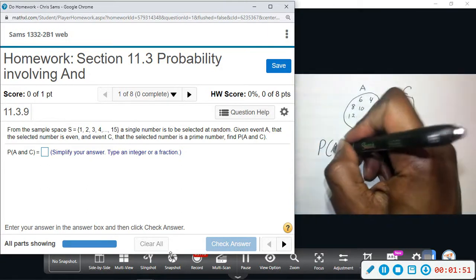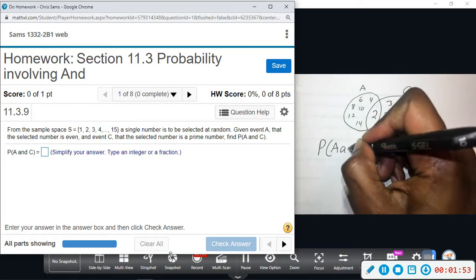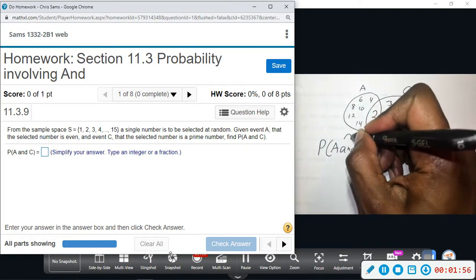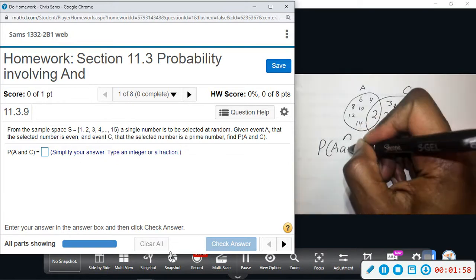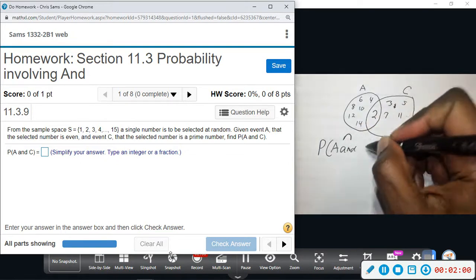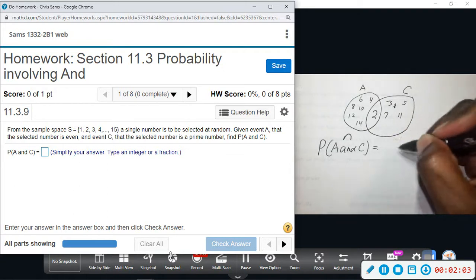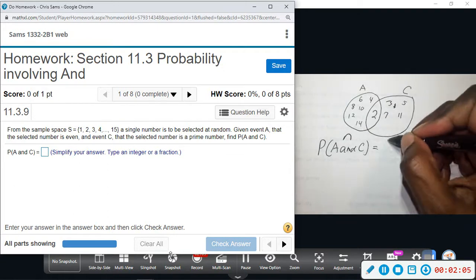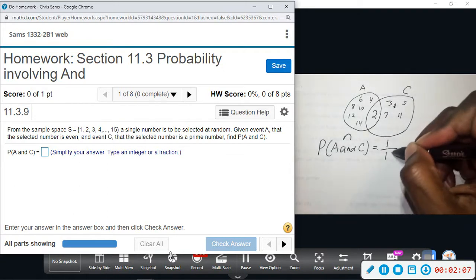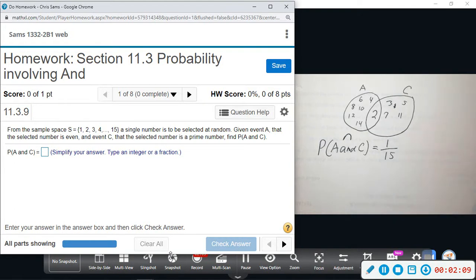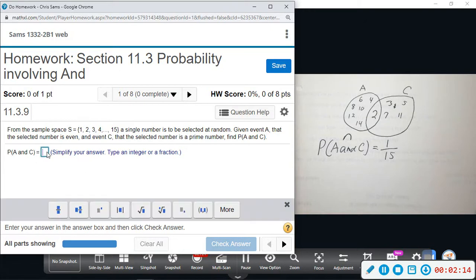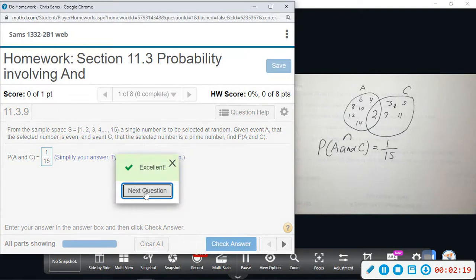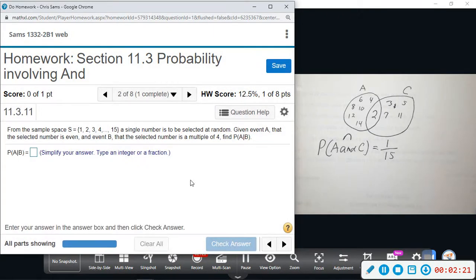So the way we write that probability is: probability of A and C, sometimes we use this upside down U shape, kind of like an intersection symbol. The probability of A and C is one number, the number two, out of 15 numbers altogether. So the probability, 'and' means both.